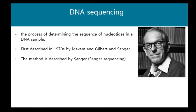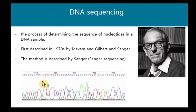DNA sequencing is a process of determining the sequence of nucleotides in the DNA sample. Instead of detecting at a specific location of the genotype, we read the whole sequence of nucleotides in a specific region of the DNA. It was described in the 1970s by Maxam and Gilbert and Sanger, and is later referred to as Sanger sequencing. Rather than detecting only a certain genotype at a specific site, we read the entire nucleotide sequence for the specific region.